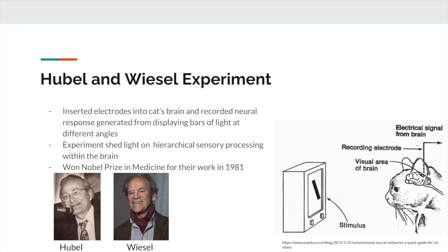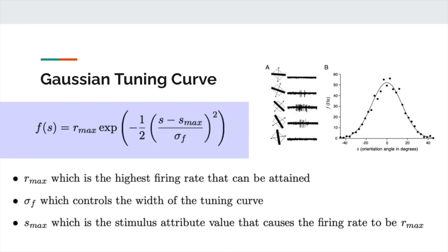Getting to the Gaussian tuning curve — it turns out you can use it to model how a specific neuron in the V1 cortex of a mammalian brain responds given a bar of light at a certain orientation. This is a very low-level neuron responding to a simple oriented stimulus.